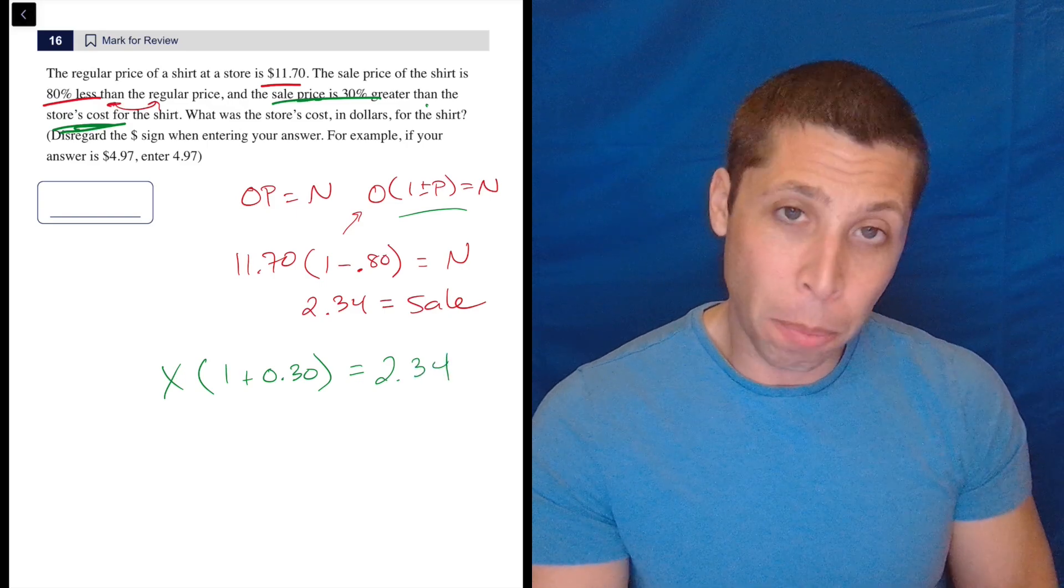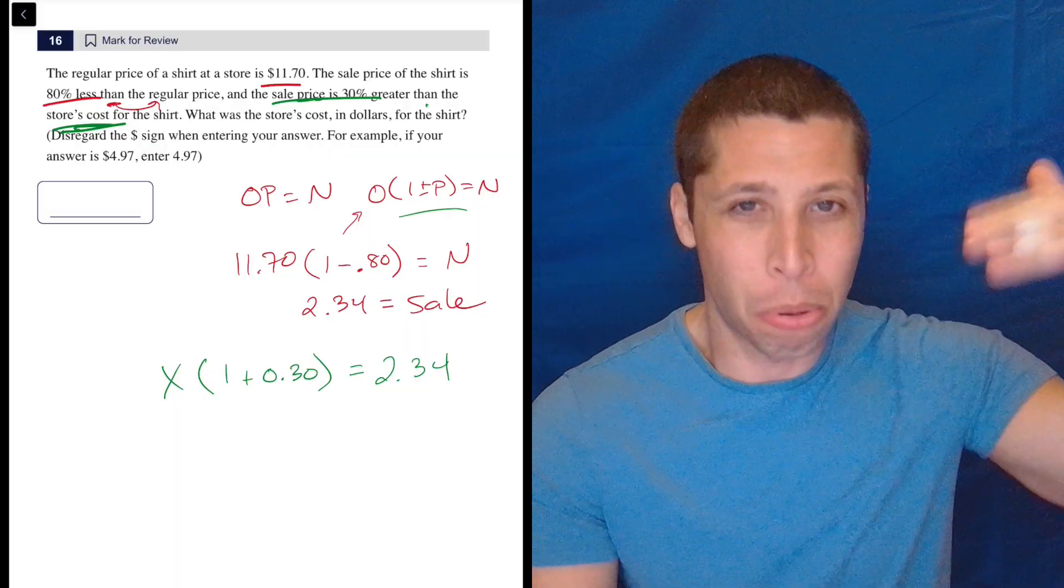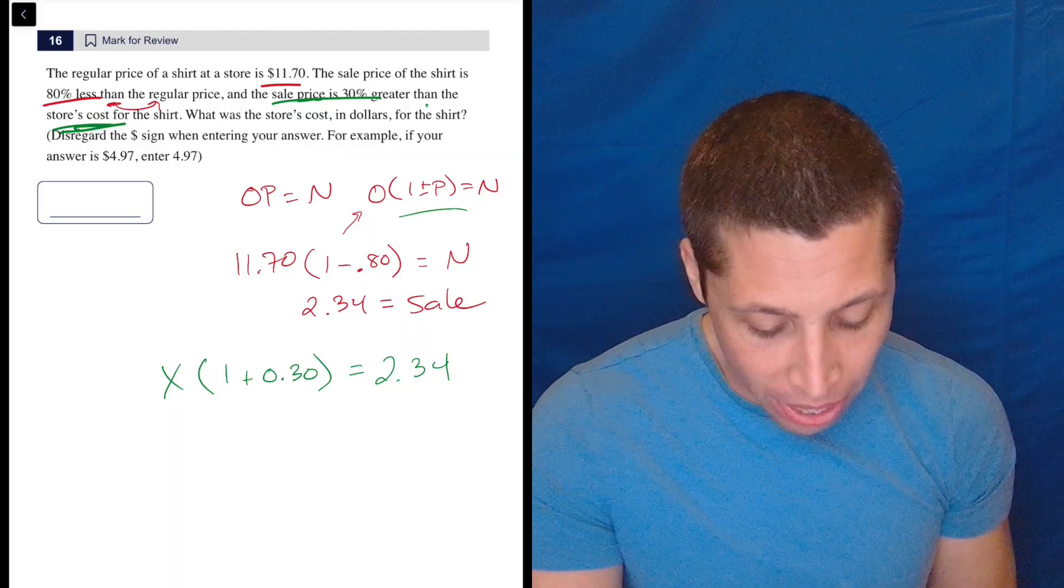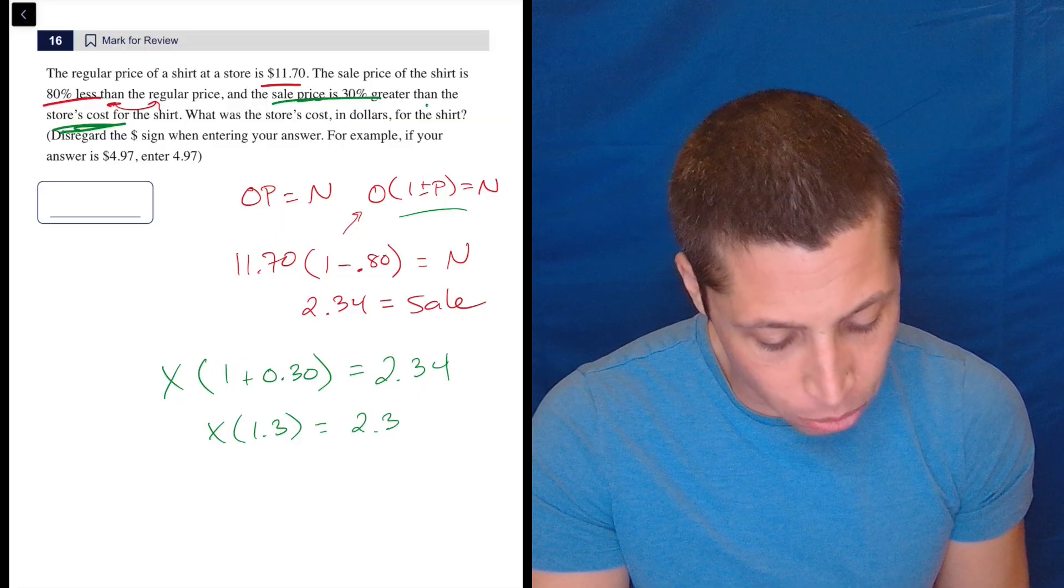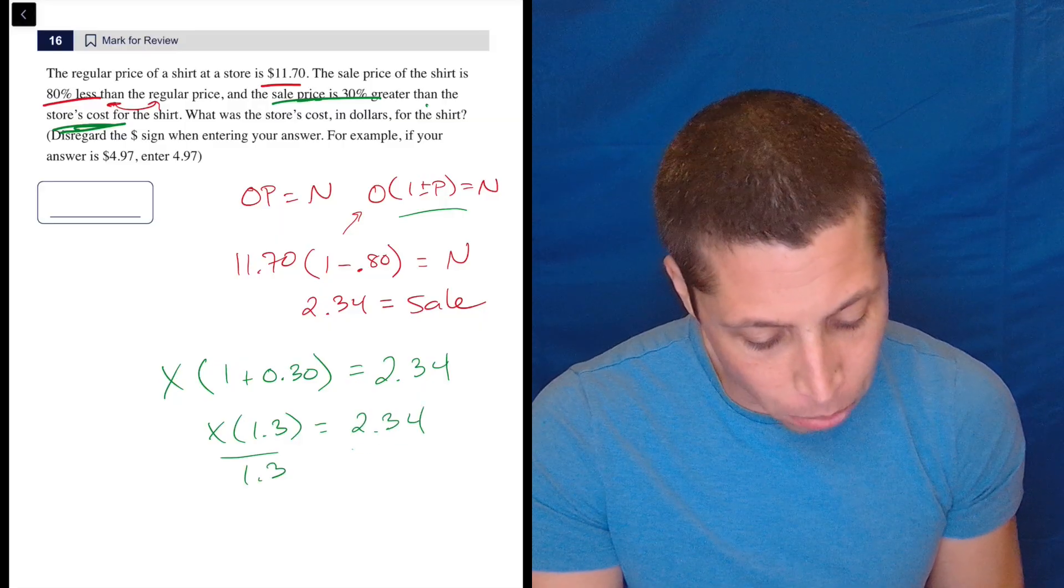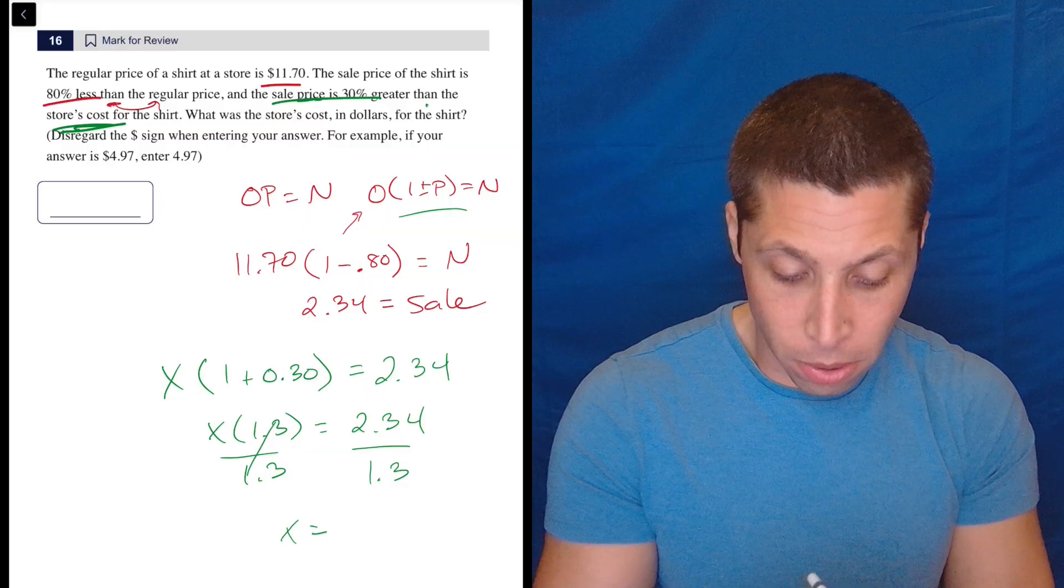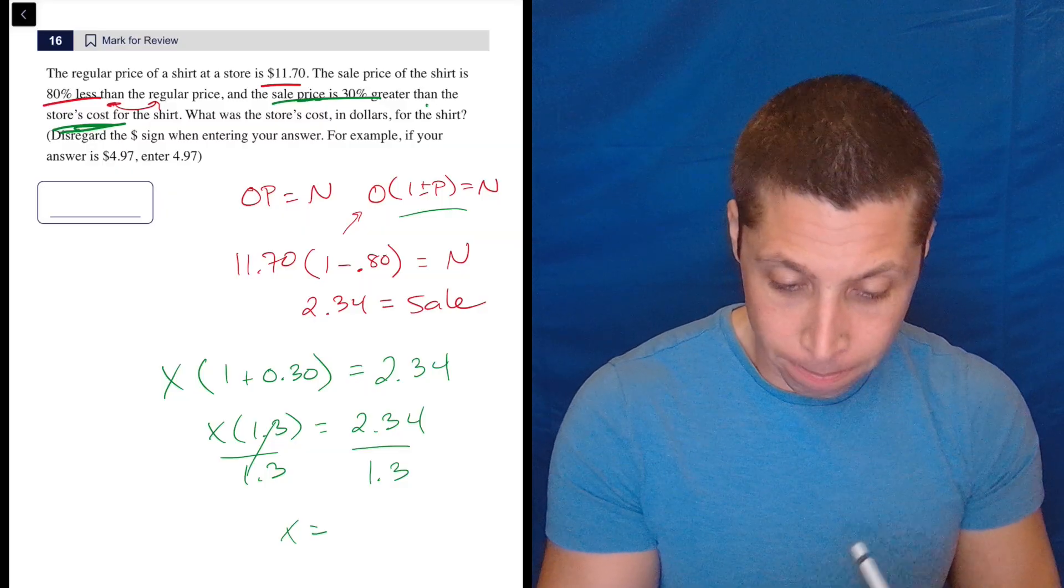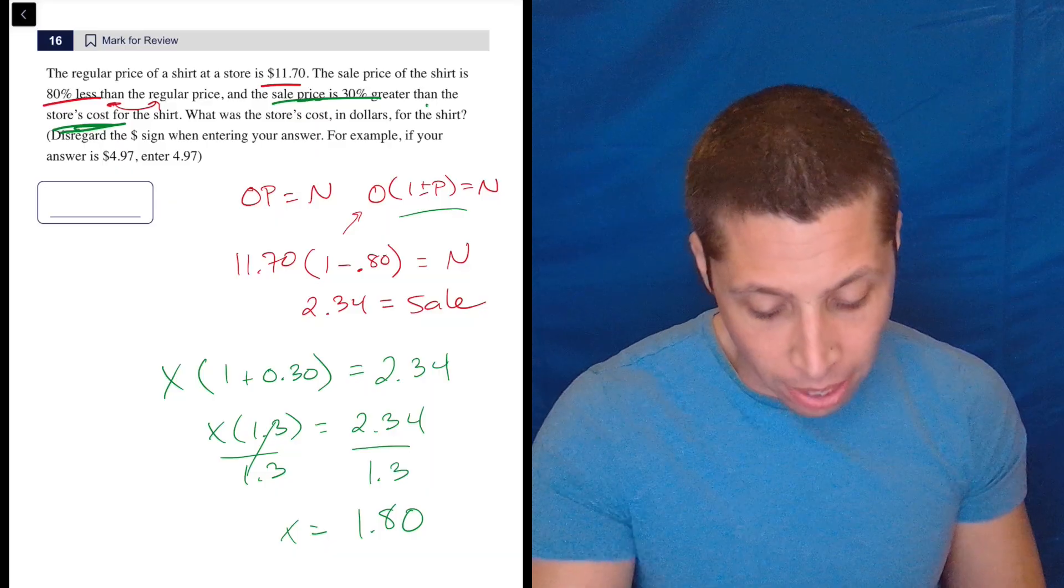So now instead of multiplying, which is kind of how we think about percentages and how the step one kind of primed us to think about them, now we have to divide. So we're going to have X times 1.3 is 2.34 divided by the 1.3 and X is 2.34 divided by 1.3, 1.8. So if we put it in dollars and cents, $1.80.